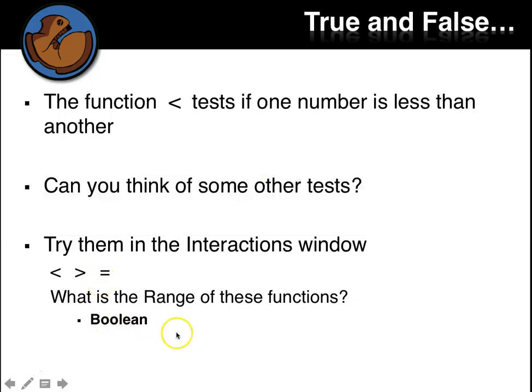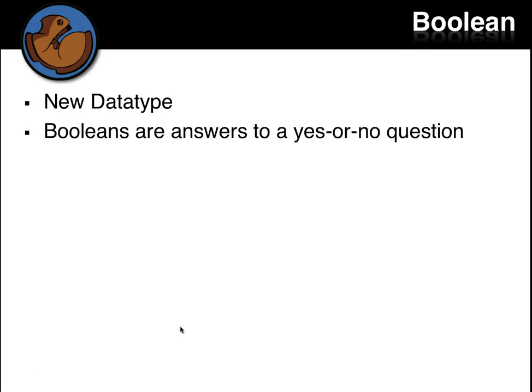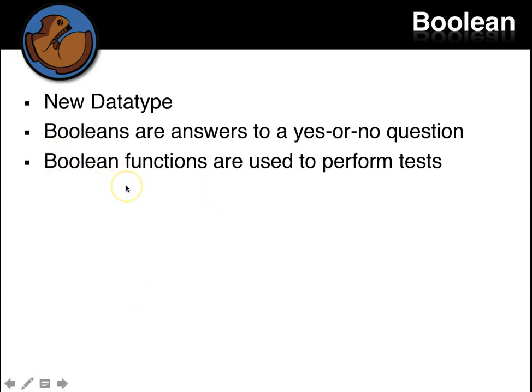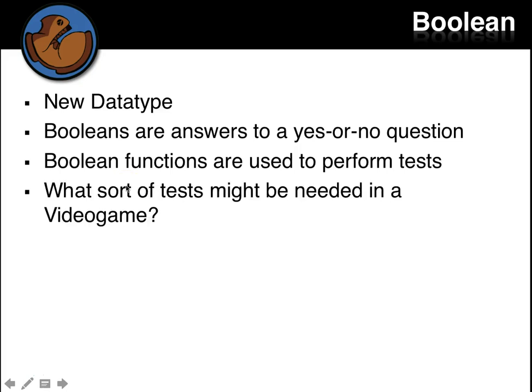And those are called Boolean values. That's named after somebody, so it's a weird word, but it's named after a guy named Boole, B-O-O-L-E. Boolean and true and false are the range. So it's a new data type, and Booleans are answers to yes or no questions. So that makes them perfect to perform tests, because tests, we want either true or false. Or we could call it pass or fail, or yes or no, but in Boolean words, we'd always just say true and false. So what sort of tests might be needed in a video game? So pause for a second, and think of some tests you might need in a video game where the answers might be true or false.